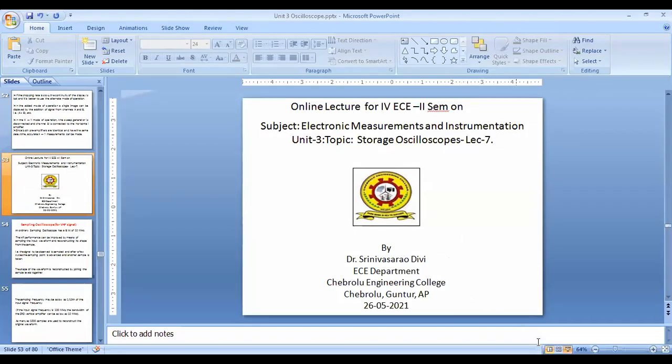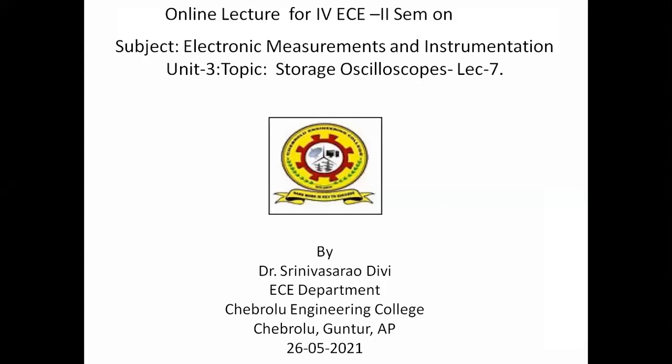The storage oscilloscope differs from other oscilloscopes in that previous types — dual trace, dual beam, or sampling oscilloscopes — can display the input waveform, but the persistence of the display is very low. When the electron beam strikes the phosphor screen, it illuminates, but that illumination is present for only below one second. To increase the ability to retain the display for seconds or minutes, we use the storage oscilloscope.